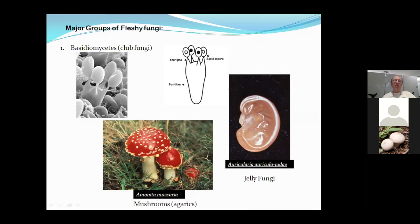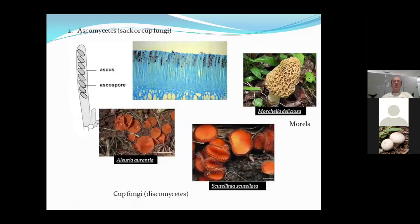If you blew them up with an electron microscope, you'd see a big club-like structure called a basidium — which means 'club' in Latin — with four spores on top. The two broad groups of Basidiomycetes are the mushrooms, like Amanita muscaria, and the jelly fungi, like Auricularia.